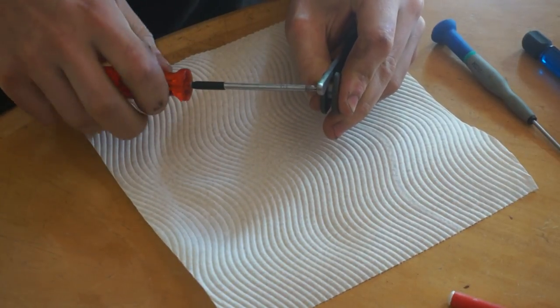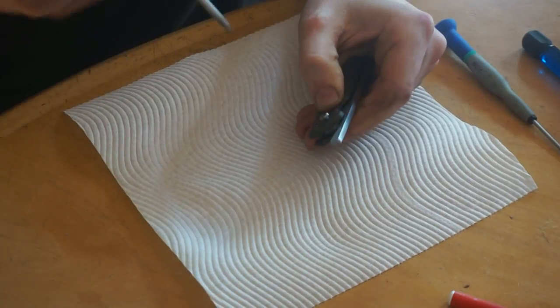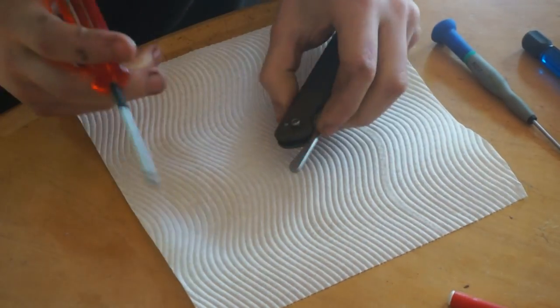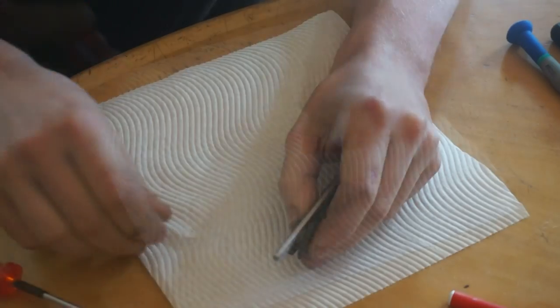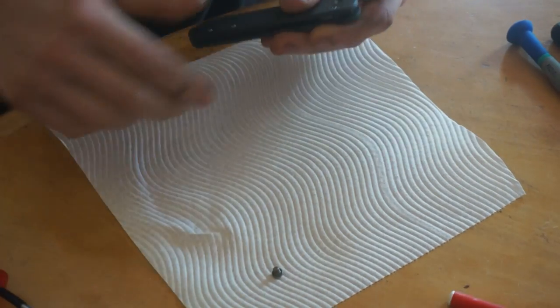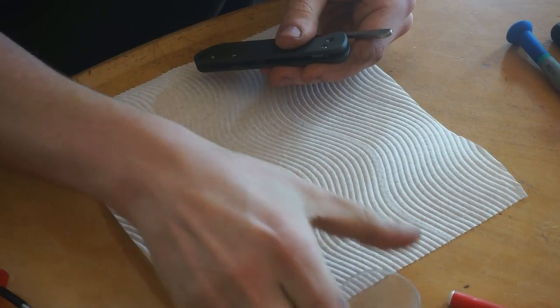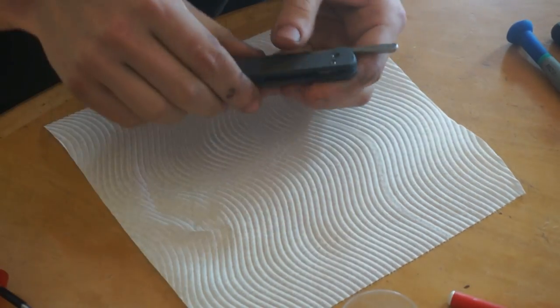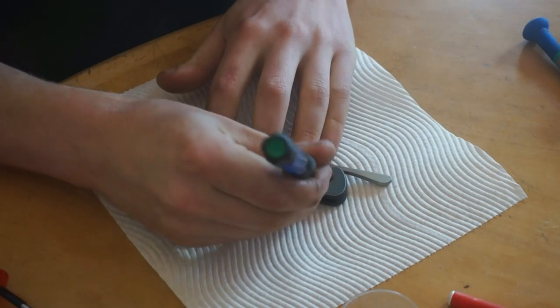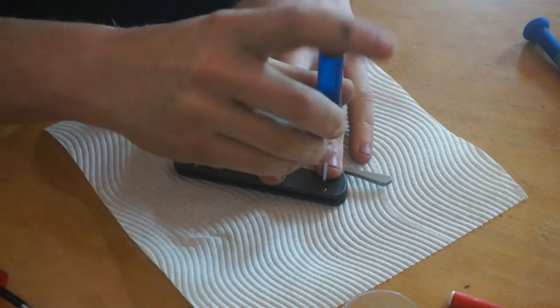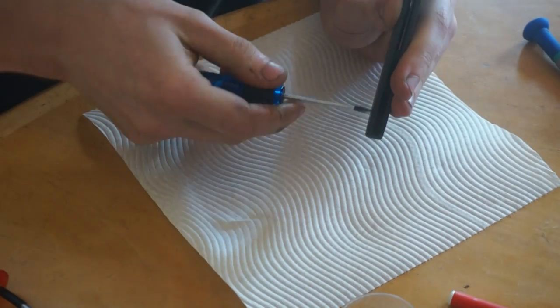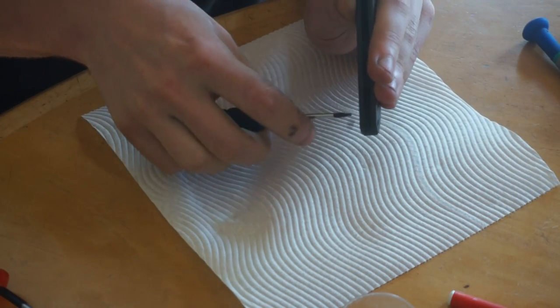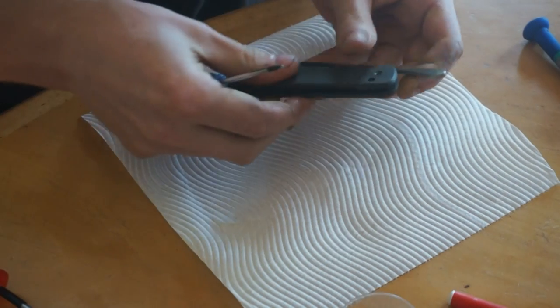So first things first, I'm just taking this apart. Now these pivots are all free-floating, so you may need two of these. Just be real careful first up. I find these shock lights work great for keeping track of all these tiny little screws.